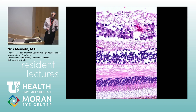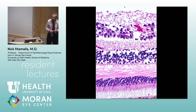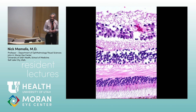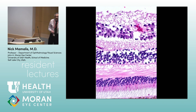The inner nuclear layer contains bipolar cells, Mueller cells, amacrine cells — not apocrine, amacrine — and horizontal cells. So this is a very busy cellular layer.